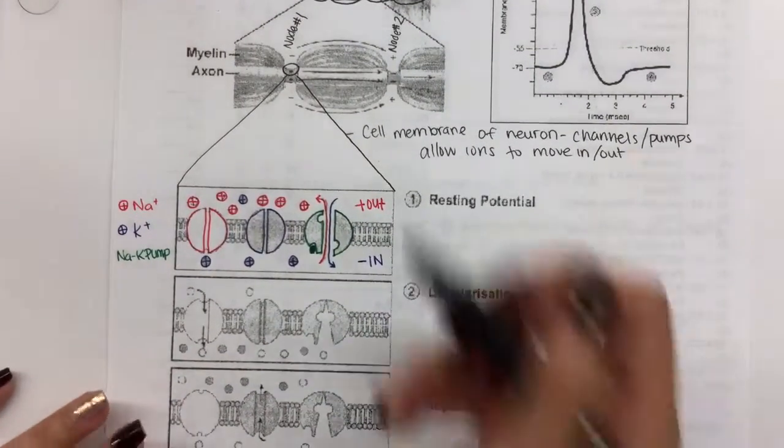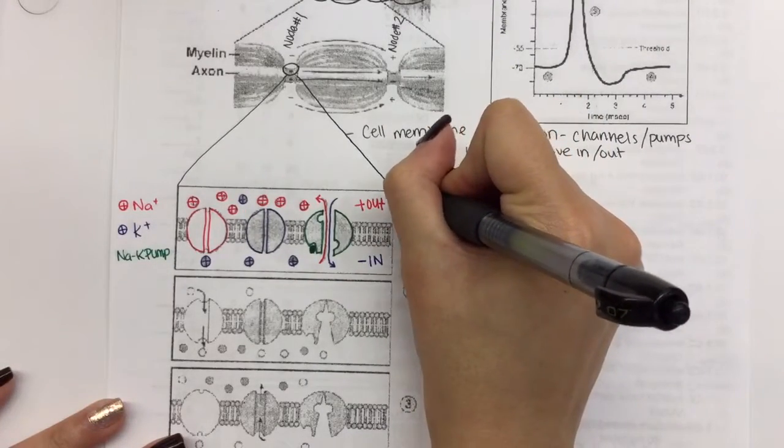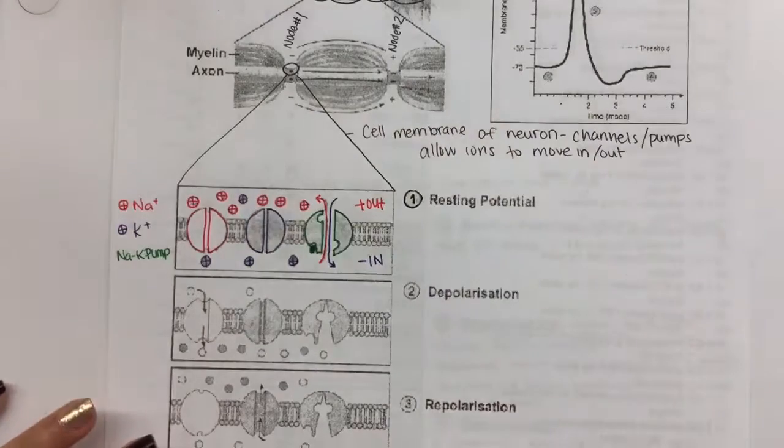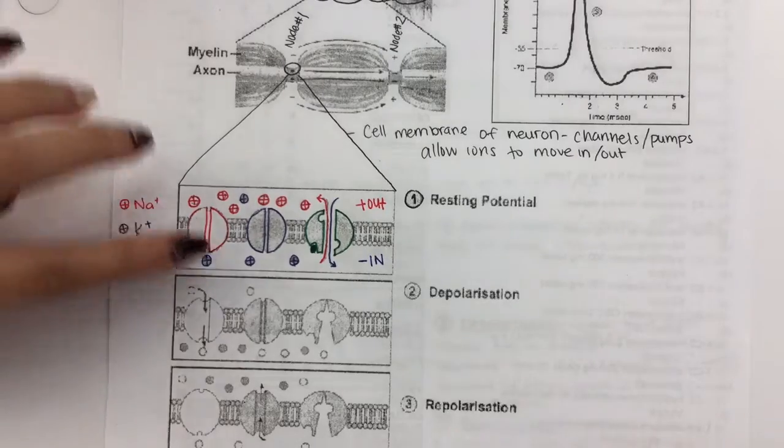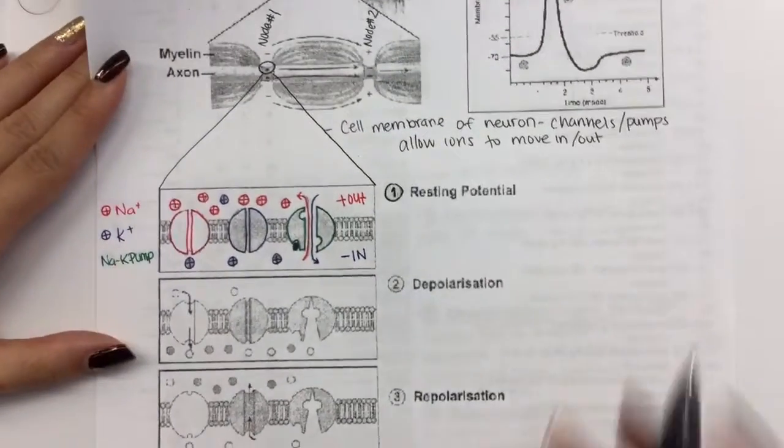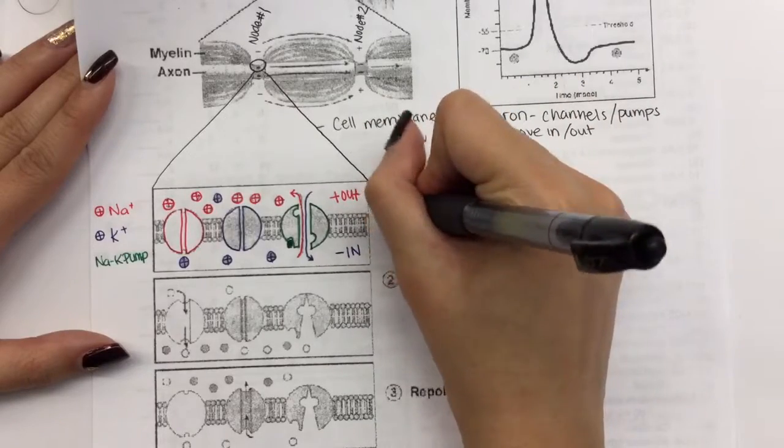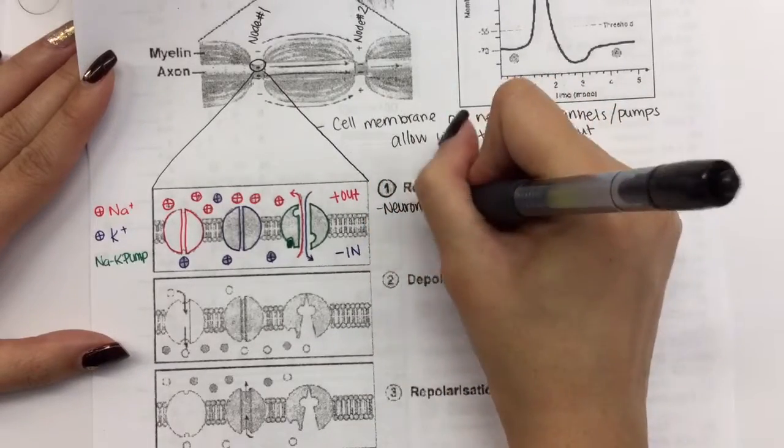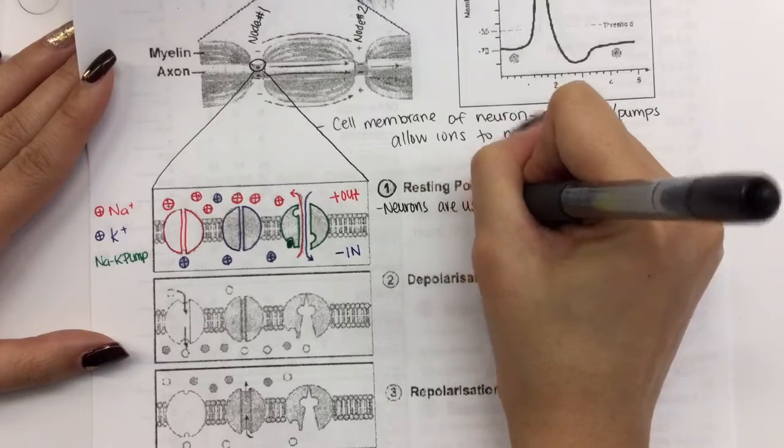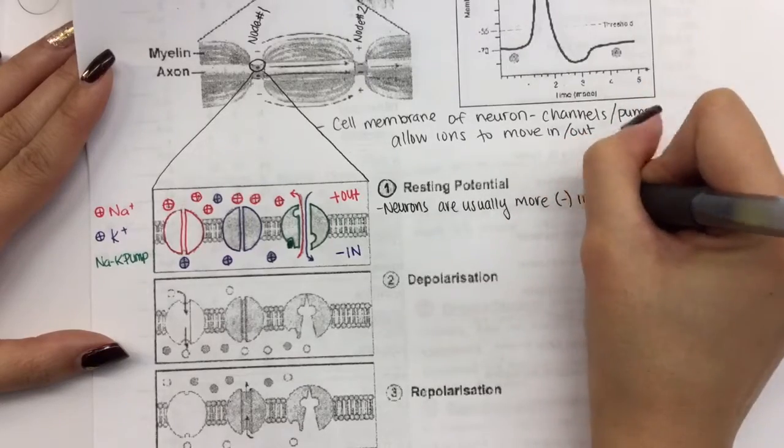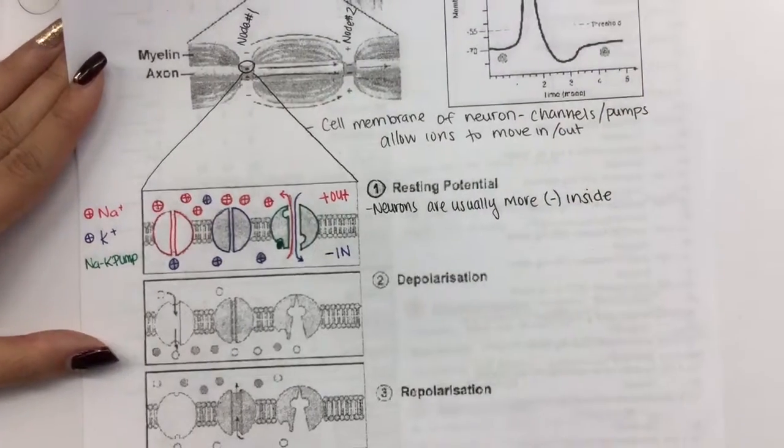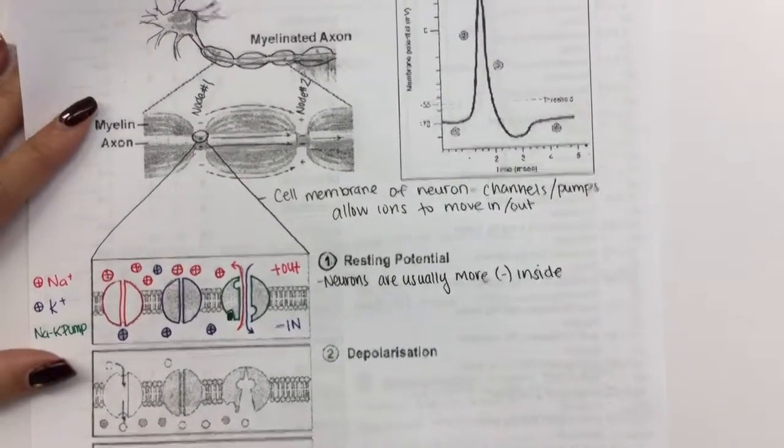To the right, I'm going to use my black pen or pencil to redo this number one here. This phase that the neuron is currently in is called the resting potential. For example, if you were sleeping and your neurons were not sending any impulses to any of your muscles, then they are currently in the resting potential phase. During the resting potential phase, neurons are usually more negative on the inside. So neurons are usually more negative when they're at rest.